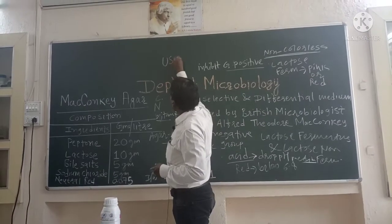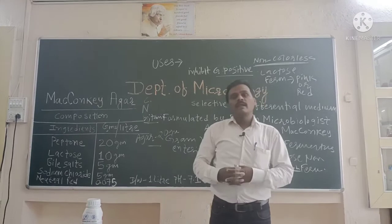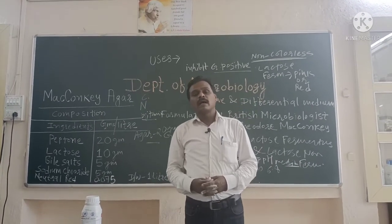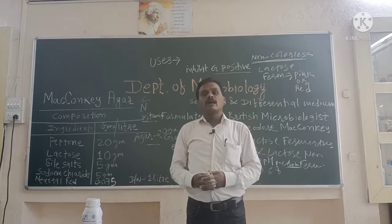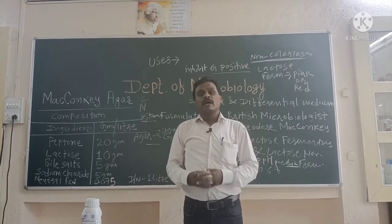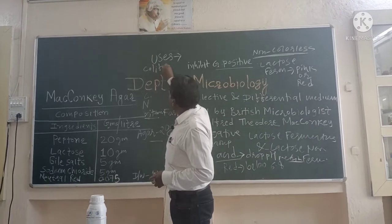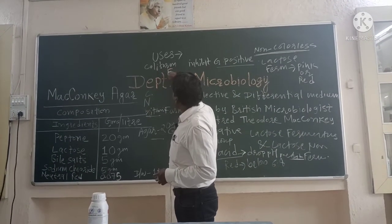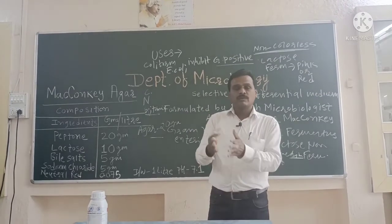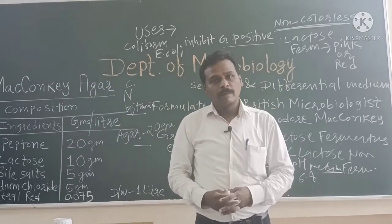The uses of MacConkey's Agar: it is used for isolation and identification of the enteric group of gram-negative bacteria belonging to the Enterobacteriaceae family. It is used for isolation of coliforms, which includes E. coli, in water samples, food stuff, and dairy products.